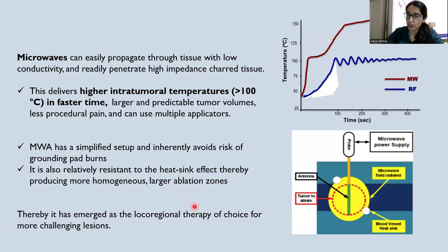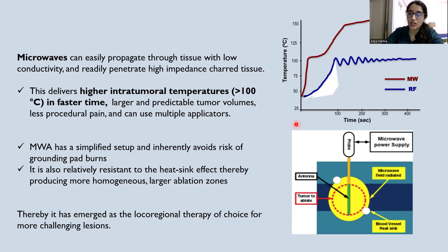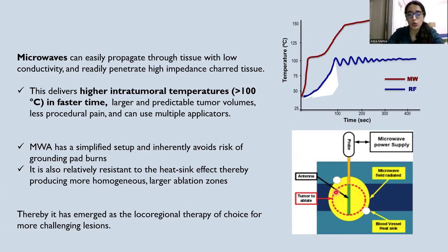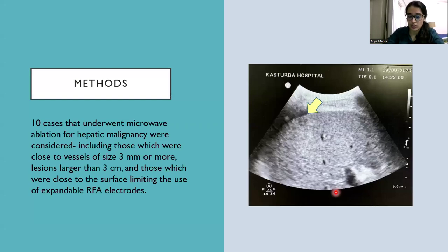Microwaves can easily propagate through tissue with low conductivity and readily penetrate charred tissue. This delivers higher intratumoral temperatures upward of 100 degrees Celsius in a faster time, with larger volumes and less pain. Microwave also has a simplified setup and inherently avoids the risk of grounding pad burns. It is also relatively resistant to the heat sink effect, thereby producing more homogeneous and larger ablation zones, and has emerged as the local regional therapy of choice for more challenging lesions.